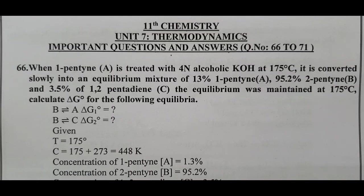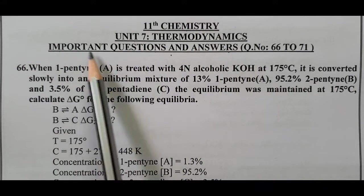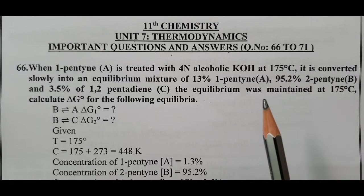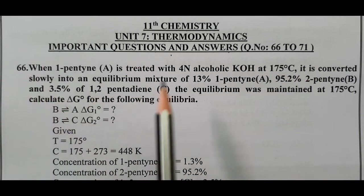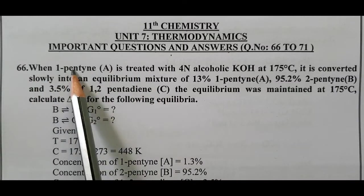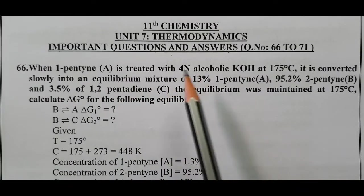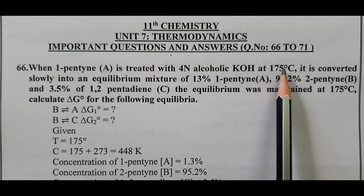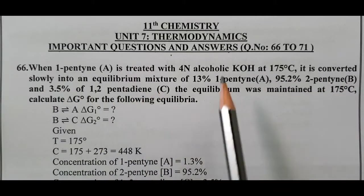Peace be upon you and your family. 11th Chemistry, Unit 7 Thermodynamics, important questions and answers, question number 66 to 71. In this video we are going to discuss question number 66. When 1-pentyne (compound A) is treated with 4N alcoholic potassium hydroxide at 175 degrees Celsius, it is converted slowly into an equilibrium mixture.